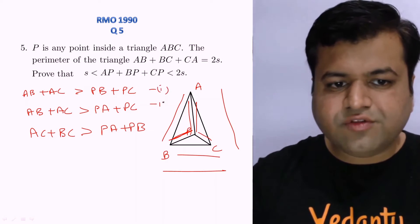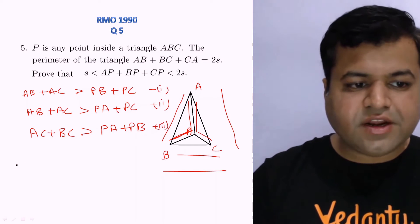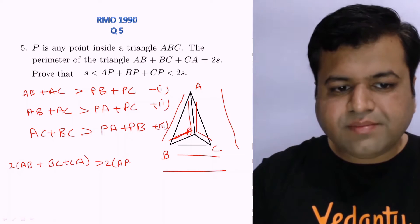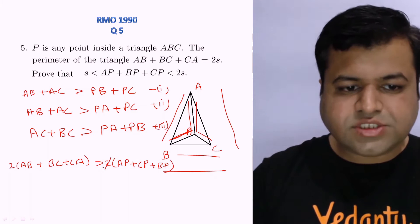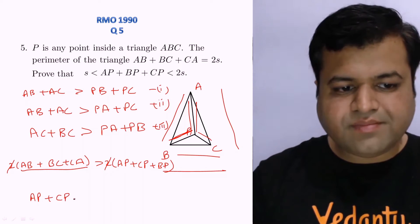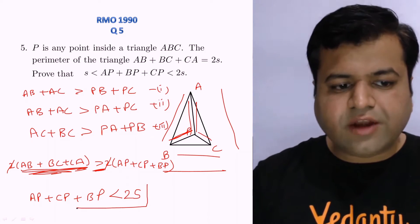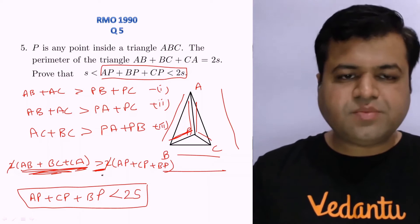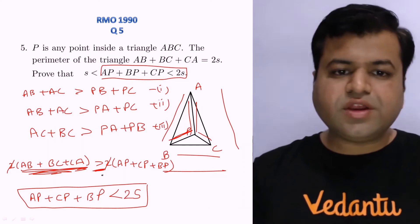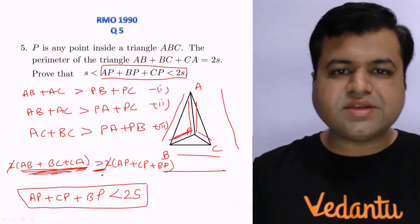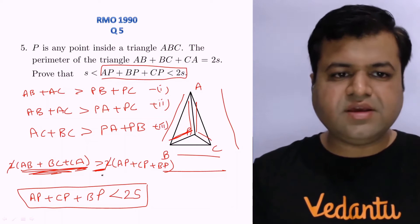Adding these three inequalities, we get twice of (AB + BC + CA) is greater than twice of (AP + BP + CP). The factor of 2 cancels, and since AB + BC + CA = 2S, we conclude AP + BP + CP < 2S. Both parts are proved. This is a question of geometrical inequalities solved using the triangular inequality and the auxiliary lemma.